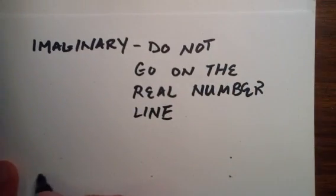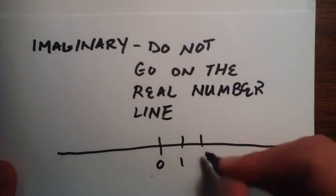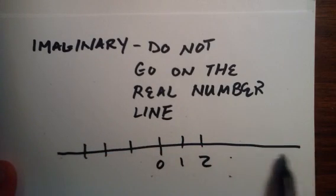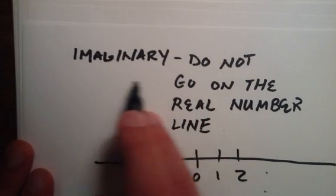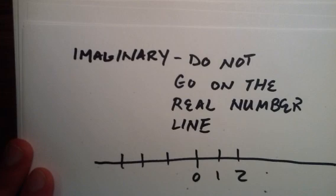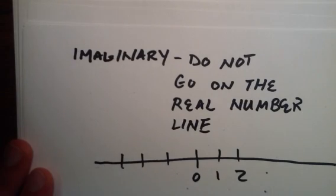That is, this number line that I drew earlier. There's no point on this number line that can represent an imaginary number. And I'll get into imaginary numbers later, like I said. So basically, that's all I really want you to know about imaginary numbers right now, is they are not real numbers that can be represented on a number line.